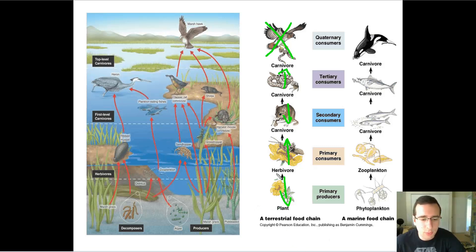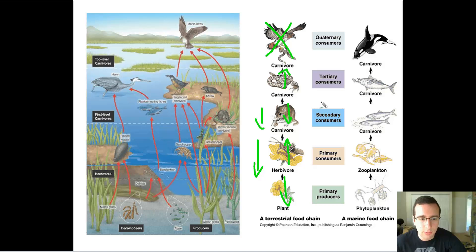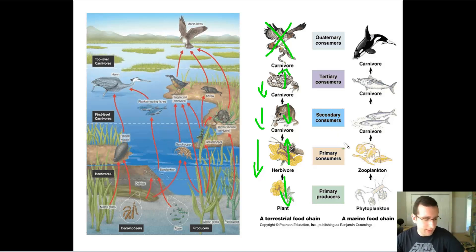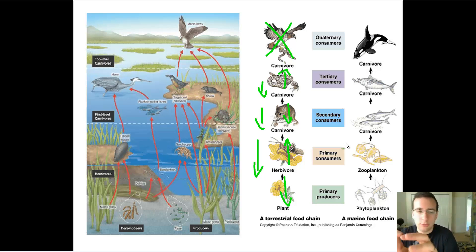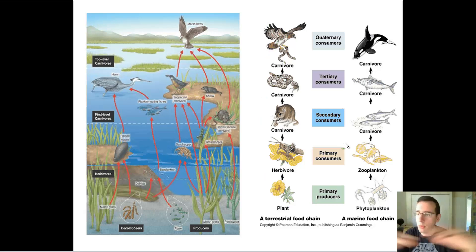But then if the producers go down, that means fewer herbivores will be able to eat, which means that number will go down, and then each level above will go down too. This is what we call cascade effects — the idea that you do something to the food web and it sends reverberating effects to everything.